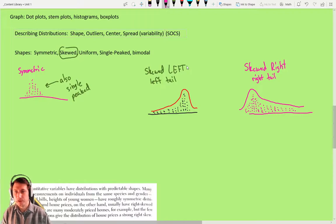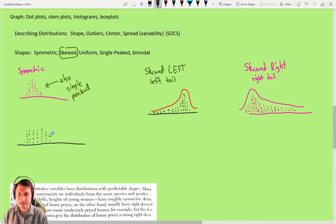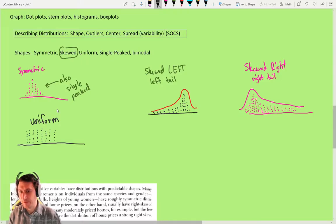Those are some of the main shapes that you can have, but it's not the only ones. You can also have uniform. So that is kind of boring, actually, if you have a dot plot and it looks kind of like a rectangle. All of the dots, all the bars are relatively the same height. There's no real peak. This is uniform. It's like everybody wearing the same thing.